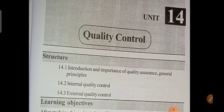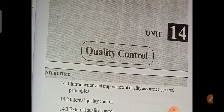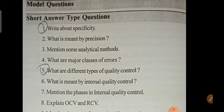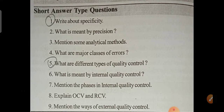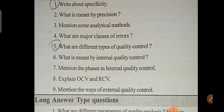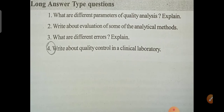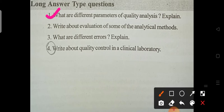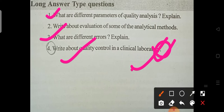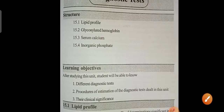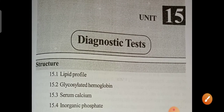Unit 14 is Quality Control. Important questions are: write about specificity, what are the different types of quality control, what are the different parameters of quality analysis, what are different errors, and write about quality control in the clinical laboratory. This is a very important topic that will come in the final examinations.